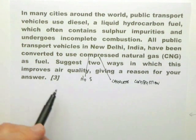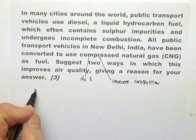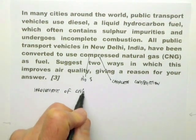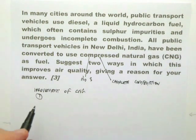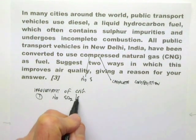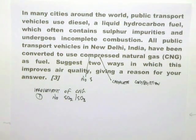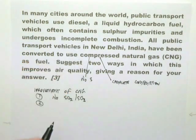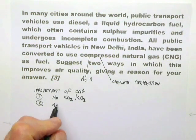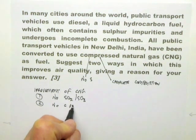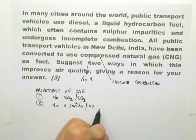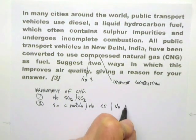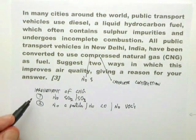So when you go to the answer — suggest two ways in which this improves air quality. The improvement of CNG: one, there's no sulphur, therefore there's no sulphur dioxide and no sulphur trioxide — that's good for air quality. The second one: complete combustion. With incomplete combustion you get carbon particles, so with complete combustion there are no carbon particles, no carbon monoxide, and no volatile organic compounds. There are your two points.